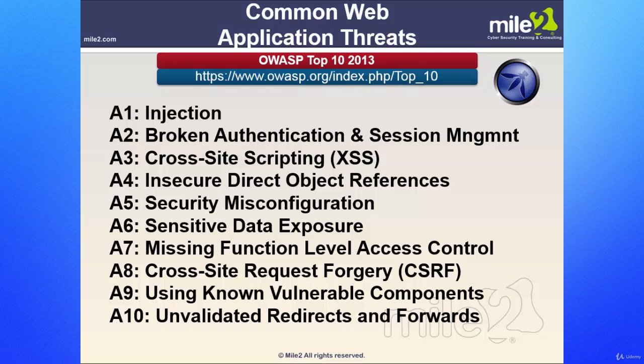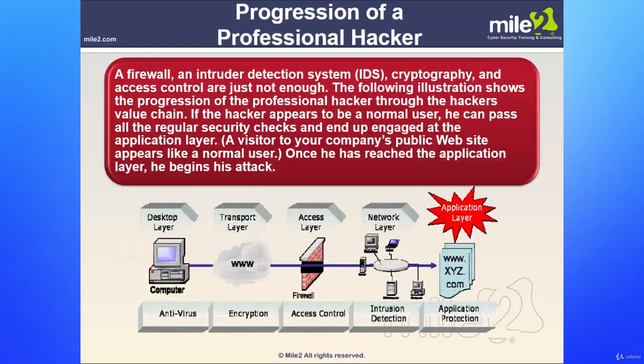Check out the OWASP.org website — it's for the Open Web Application Security Project. Now let's take a look at the progression of a professional hacker. Here we can see a firewall, an intrusion detection system, cryptography, and access controls — obviously they're not going to be enough. The following illustration shows the progression of a professional hacker through the hacker's value chain. If the hacker appears to be a normal user, he can pass all the regular security checks and end up engaged at the application layer.